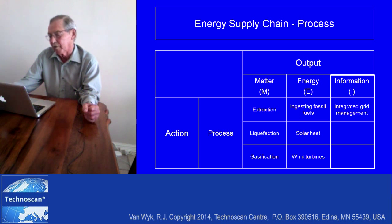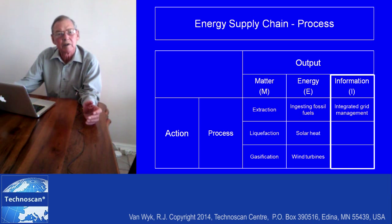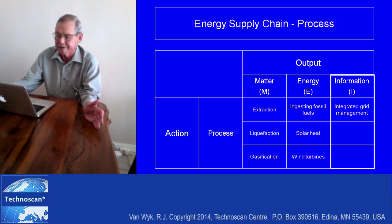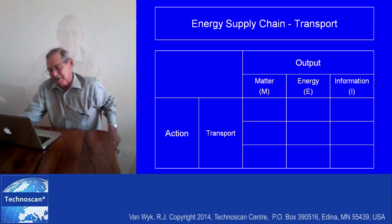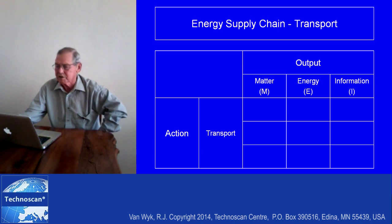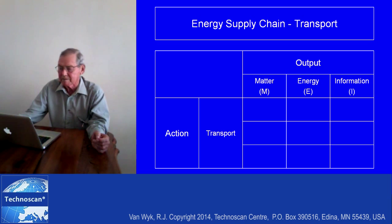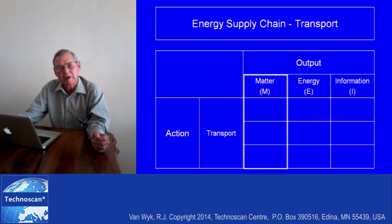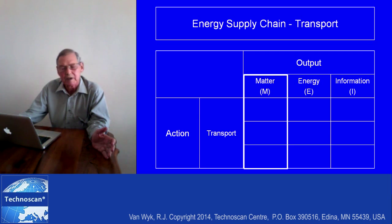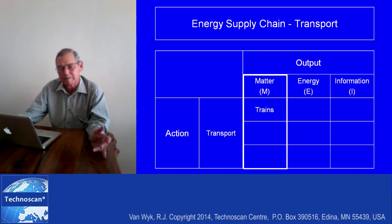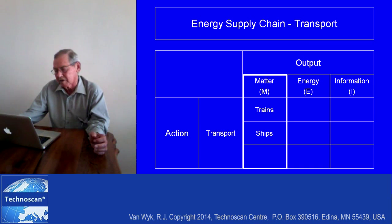Moving on to the next phase — transportation. The next phase in the energy supply chain is transportation. Recall there are three phases: processing, transporting, and storing. Transporting can be applied to matter transport, and we can look at the development of trains, ships, and pipelines.